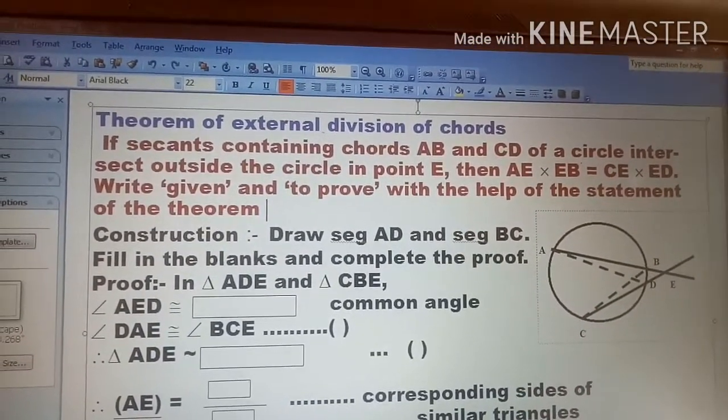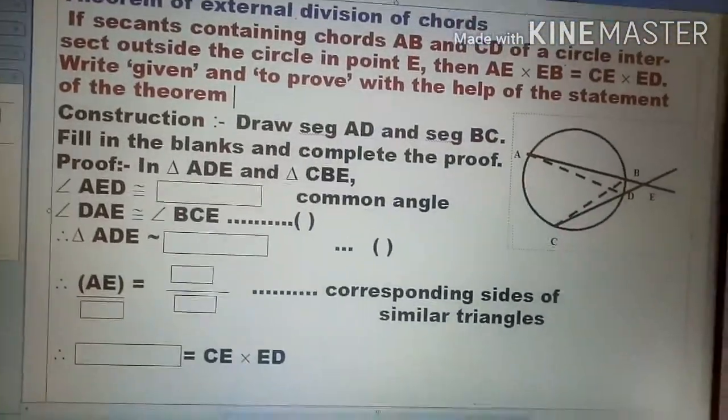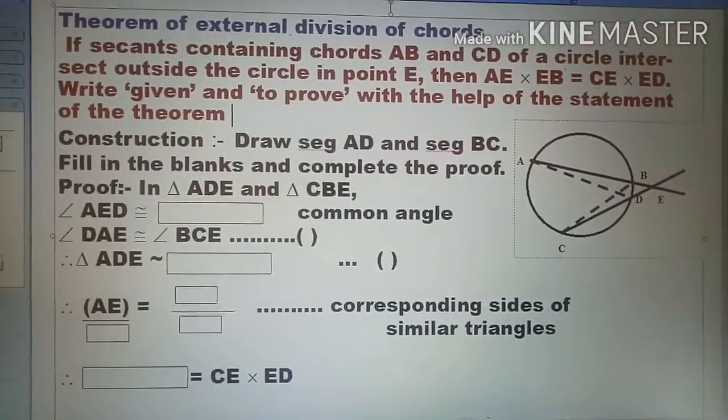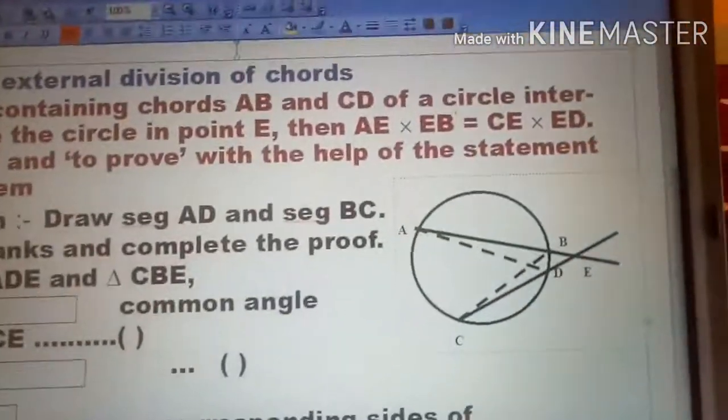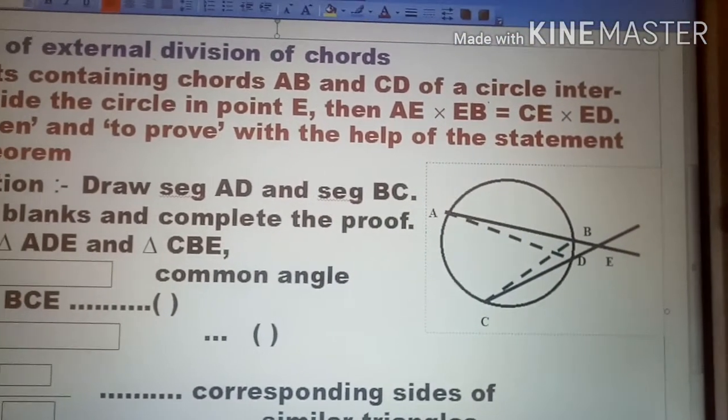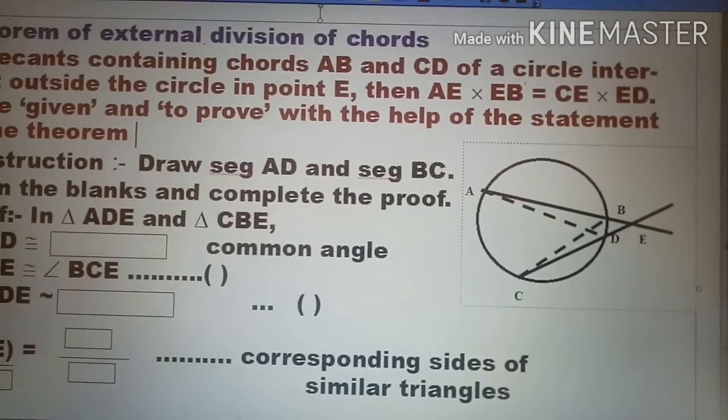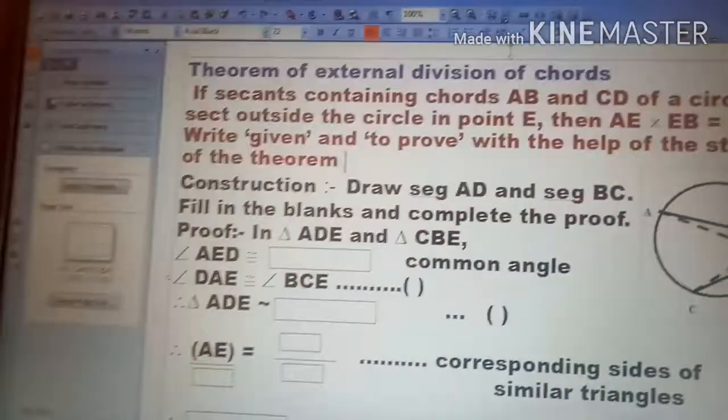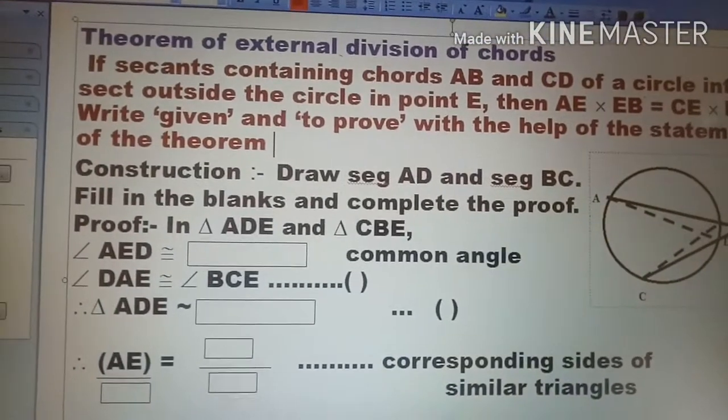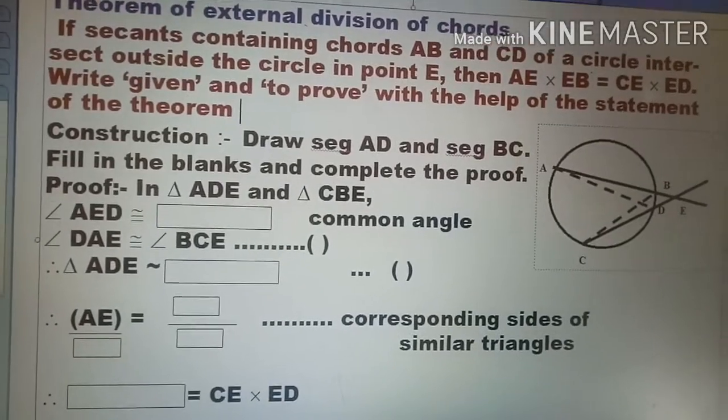Write 'given' and 'to prove' with the help of the statements of the theorem. In the textbook these are given like filling in the blanks, so now we have to construct two segments. You can see in the diagram segment AD and segment BC, these two are chords of a circle.